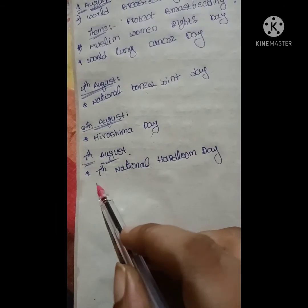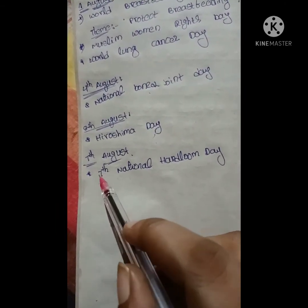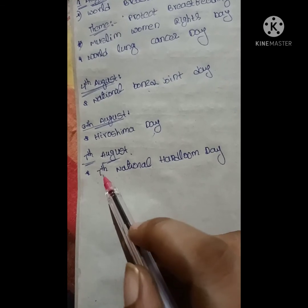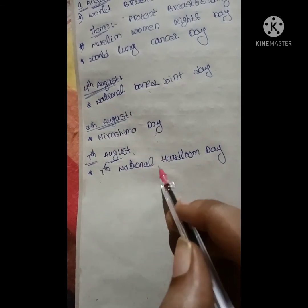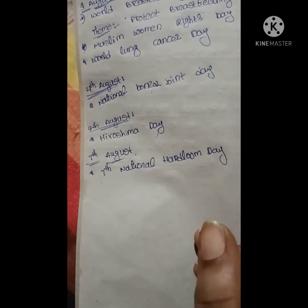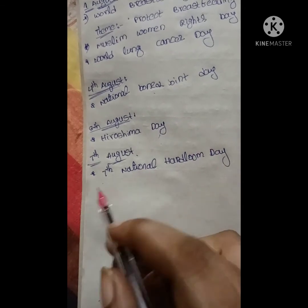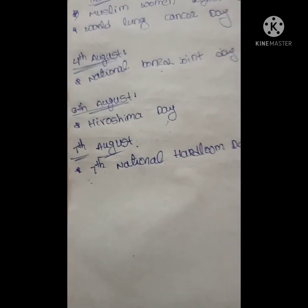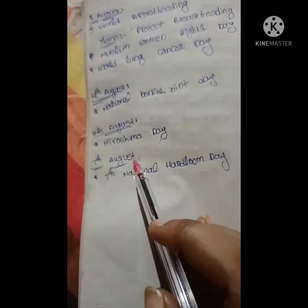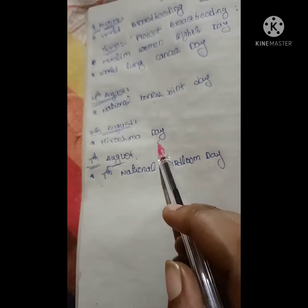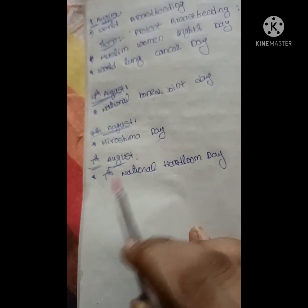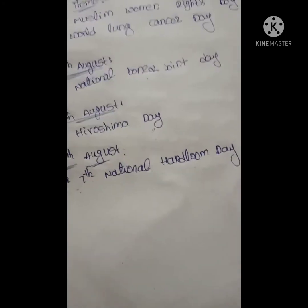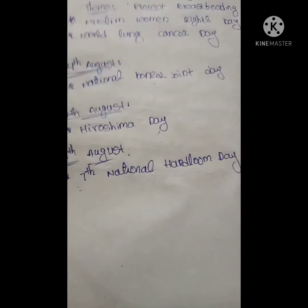If they ask which national day we celebrate on 7th August, the answer is National Handloom Day, celebrated on 7th August. So we are celebrating the 7th National Handloom Day.